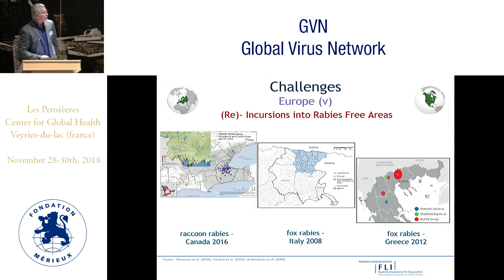Incursions and reincursions of rabies into rabies-free areas are a permanent threat, as has been experienced with raccoon rabies in Ontario or New Brunswick in Canada, or with fox rabies in Italy and Greece.